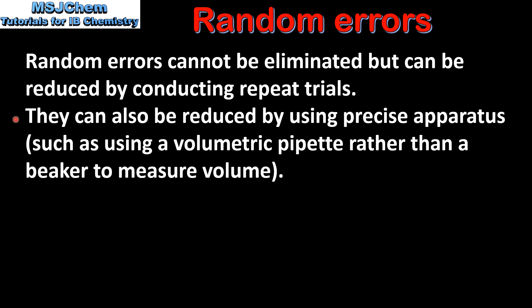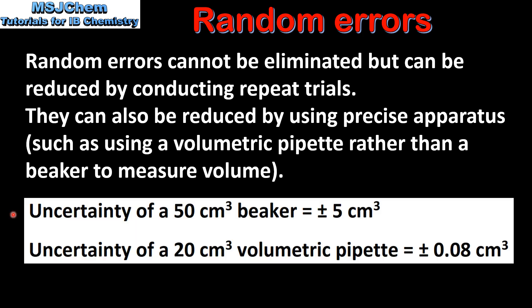Random errors can also be reduced by using precise apparatus, such as using a volumetric pipette rather than a beaker to measure volume. If we compare the uncertainty of a 50 cm³ beaker versus a 20 cm³ volumetric pipette, we can see that the beaker has an absolute uncertainty of ±5 cm³, while the volumetric pipette has an absolute uncertainty of ±0.08 cm³. So the volumetric pipette has a lower absolute uncertainty, which can help reduce random errors.